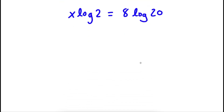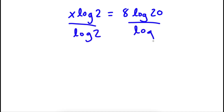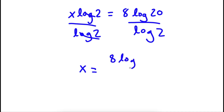Now what I'm going to do is I'm going to divide both sides by log 2. So these two cancel out and I'm left with x is equal to 8 times log 20 over log 2.